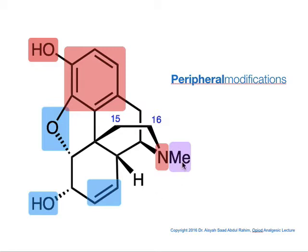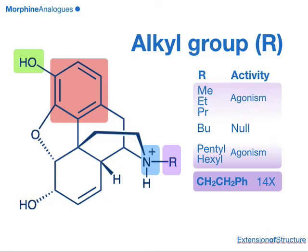The third part of modification would be done on the methyl group. This would involve the extension of the amino group, especially on the alkylation. Usually it doesn't actually change much, except that if you increase the chain length, it would result in antagonism, meaning that the analgesic property will increase. When it comes to allyl, there's no analgesic property. Then you go on to the 5-carbon or 6-carbon, it comes back, and if you extend it further and add in a phenol or aromatic group, the analgesic activity of morphine somehow increases to 14 times that of morphine.